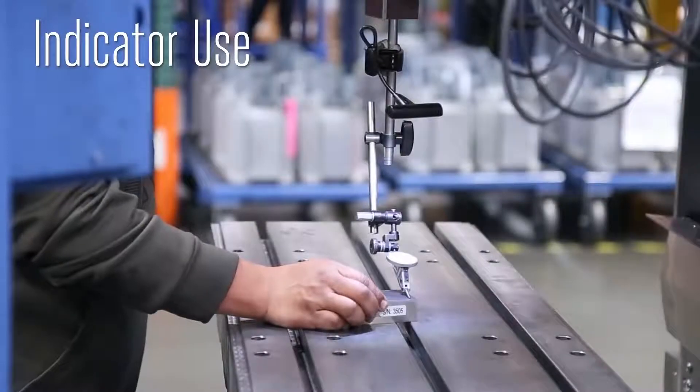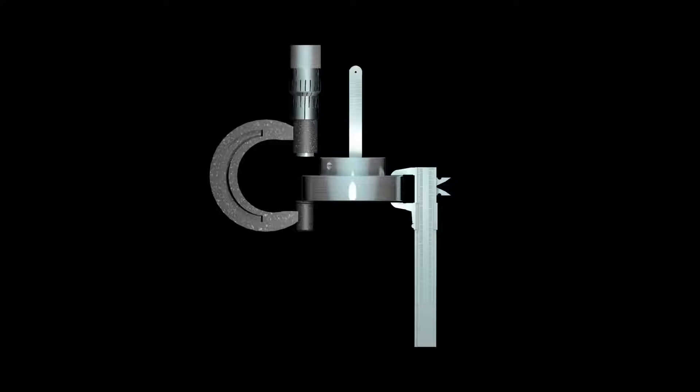Now, an indicator doesn't actually provide absolute measurements like length or width. You use a caliper, a micrometer, or even a scale for that.